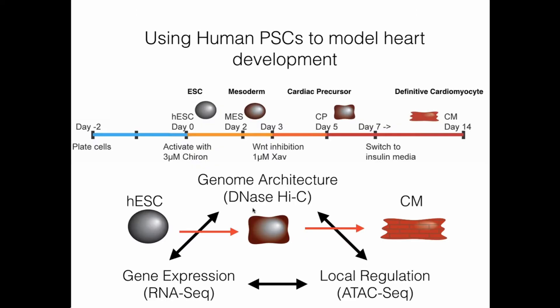The work I'm going to talk about today uses human pluripotent stem cells to model heart development, looking at four time points: the initial embryonic stem cell state, an early mesoderm state about two days after the stem cell when we've activated the signaling pathway, a cardiac progenitor stage after we inhibit the Wnt pathway, and a definitive cardiomyocyte at 14 days. We examine the crosstalk between genome architecture by Hi-C, gene expression by RNA-seq, and local accessibility via ATAC-seq. We do have a preprint available on BioRxiv that goes into more detail.